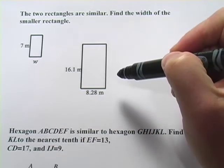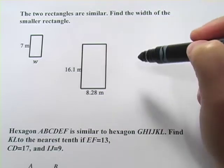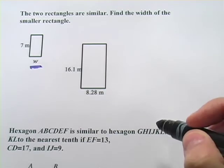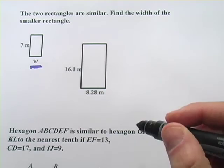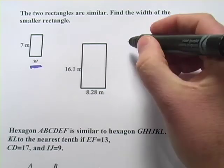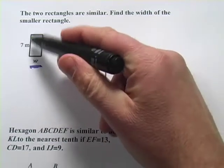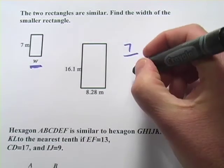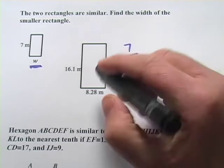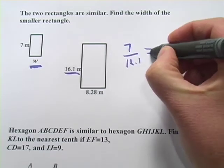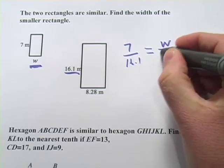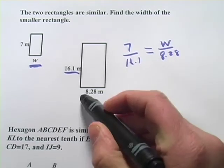It says the two rectangles are similar. Find the width of the smaller rectangle. So we want to find that side right there. Well, we can set up a proportion to do that because these are similar rectangles. So I'm going to say 7, the length of this rectangle, is to 16.1, the length of this rectangle, as W is to 8.28, which is the width of this.